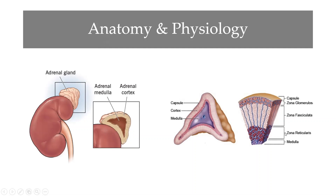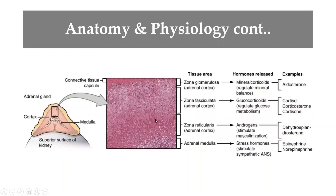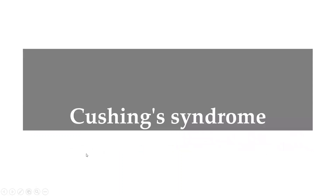The adrenal cortex is divided into three zones. The innermost region is the zona reticularis, the middle one is the zona fasciculata, and the outermost is the zona glomerulosa. Each zone produces specific hormones: the reticularis produces androgens, the fasciculata produces glucocorticoids like cortisol, and the glomerulosa produces mineralocorticoids — a classical example being aldosterone.